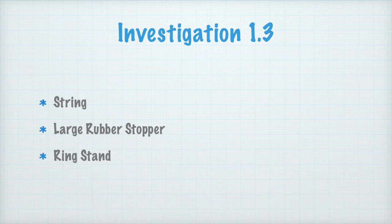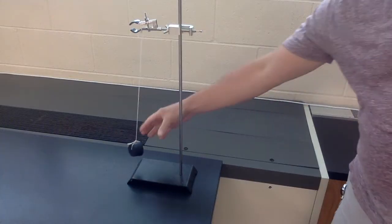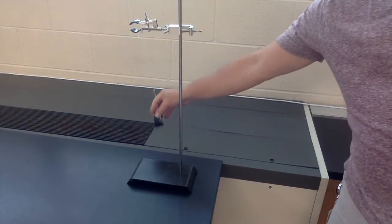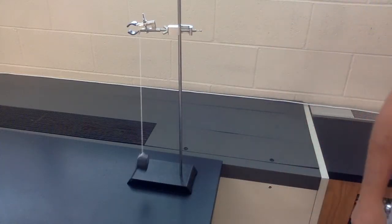For investigation 1.3 you need some string, a rubber stopper, and a ring stand. You'll be tying the rubber stopper to the end of the string and hanging it from the ring stand so that it forms a pendulum.